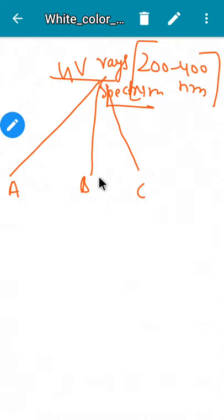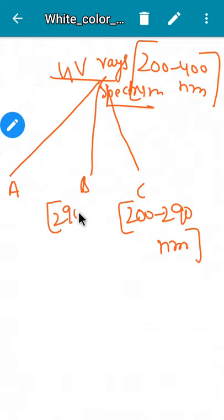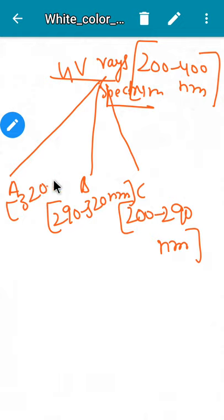The wavelengths of A, B, and C can be remembered by writing them backward — C, B, A. The wavelength of ultraviolet C is from 200 to 290 nanometers, ultraviolet B is from 290 to 320 nanometers, and ultraviolet A is from 320 to 400 nanometers.